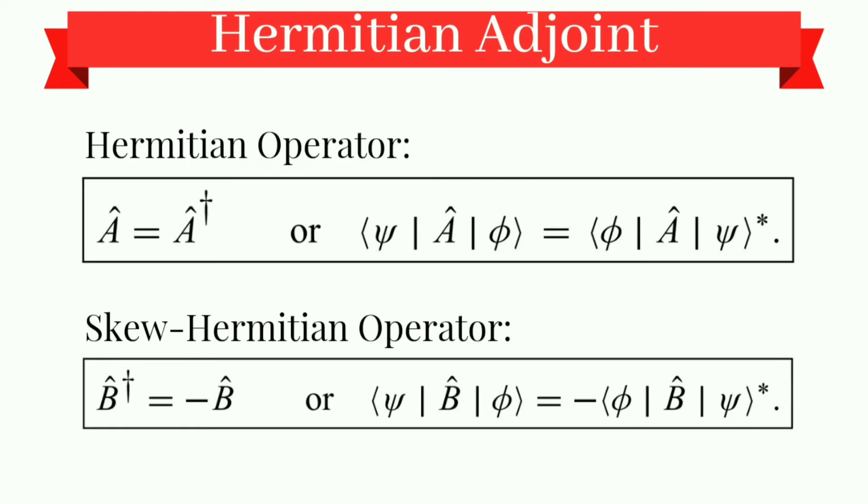Now, talking about Hermitian and skew-Hermitian operators. An operator A is said to be a Hermitian operator if it is equal to its adjoint, that is A dagger. Means A operator equals A dagger. Then it is a Hermitian operator. Or we can say, bra psi A operator ket phi gives bra phi A operator ket psi star. Skew-Hermitian is nothing much but only Hermitian operator with negative.